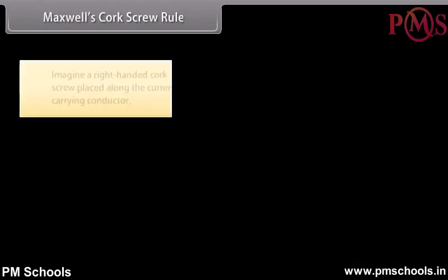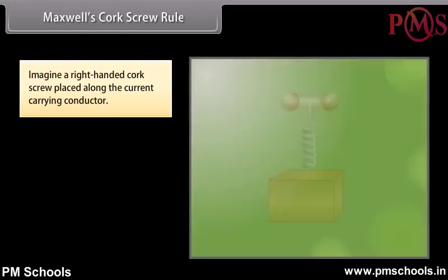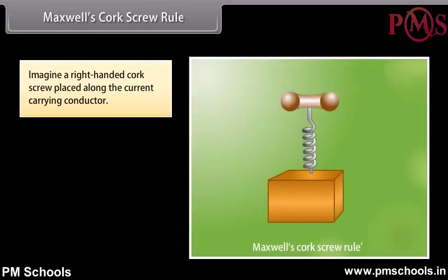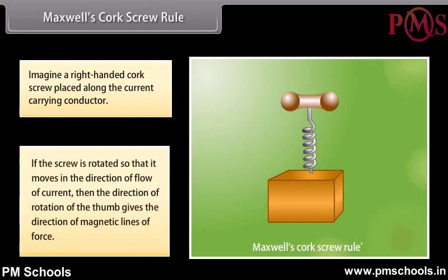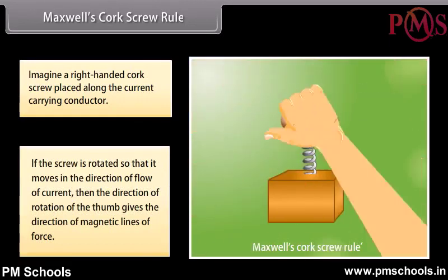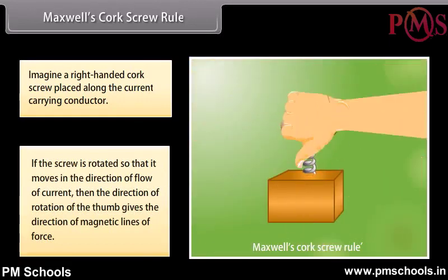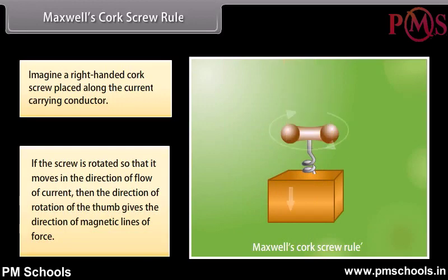Maxwell's corkscrew rule: Imagine a right-handed corkscrew placed along a current carrying conductor. If the screw is rotated so that it moves in the direction of flow of current, then the direction of rotation gives the direction of magnetic lines of force.